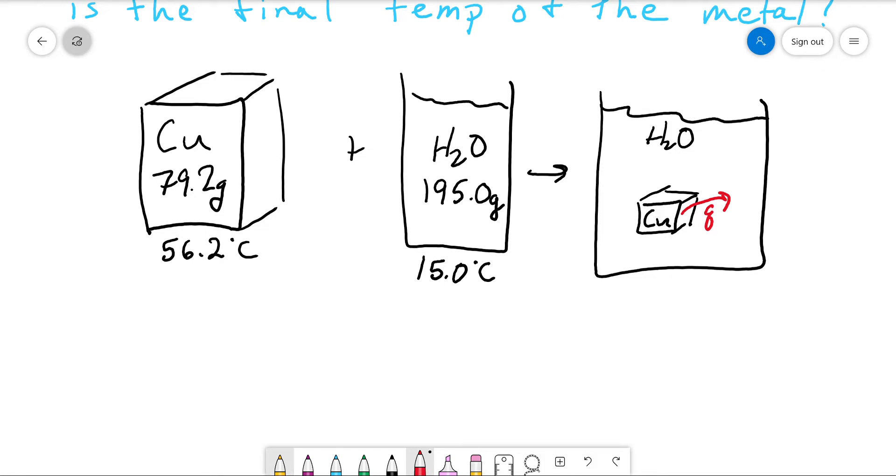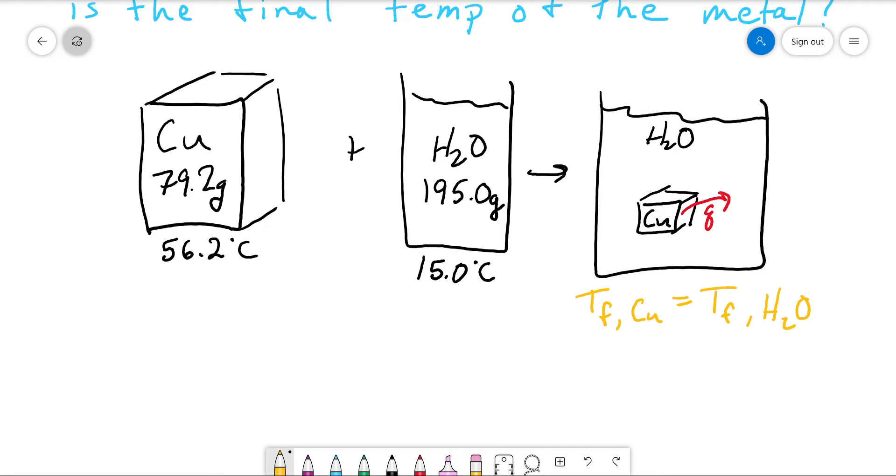That will happen until they are at the same temperature. So that is key to this problem. T final of the copper is going to be equal to T final of the water. How do we know that? Because again, heat will flow until they are at the same temperature. Then there is no hot, no cold. Heat can no longer flow.